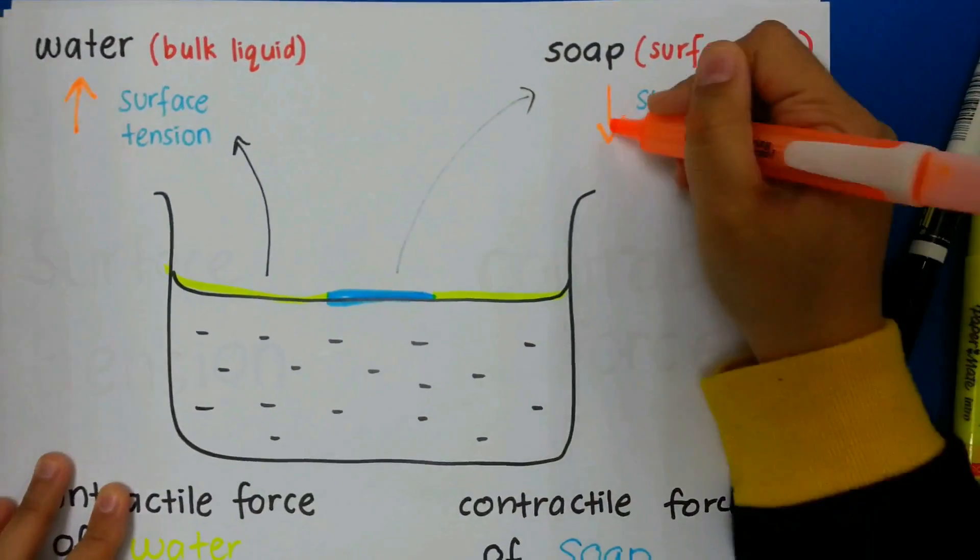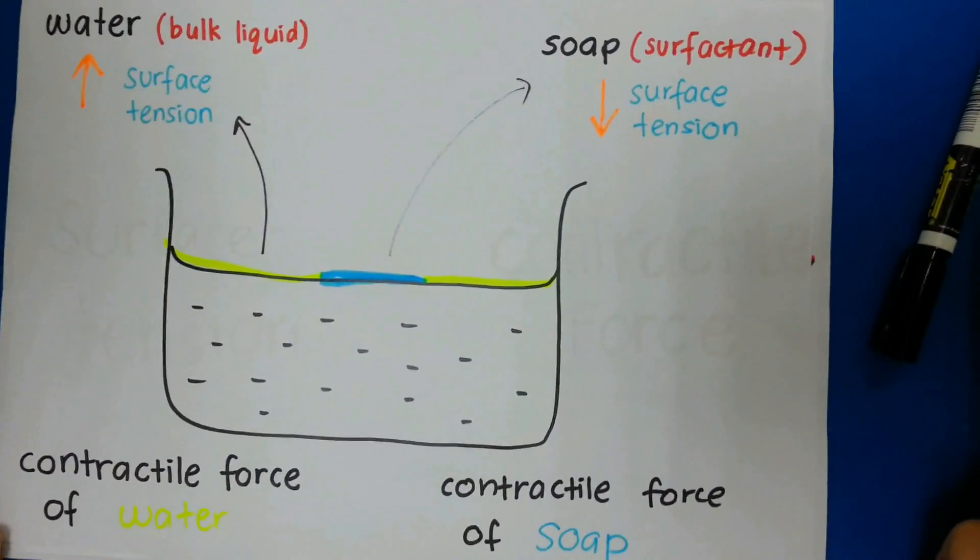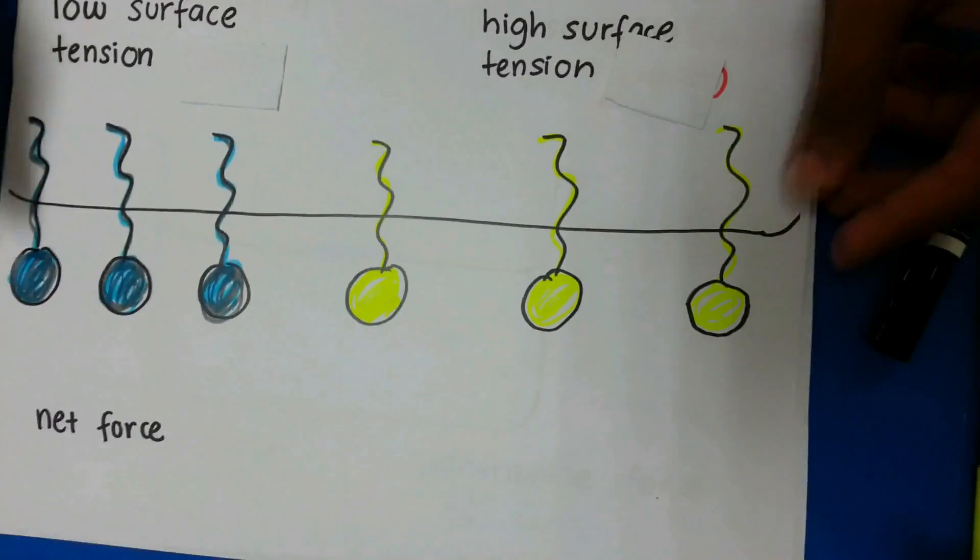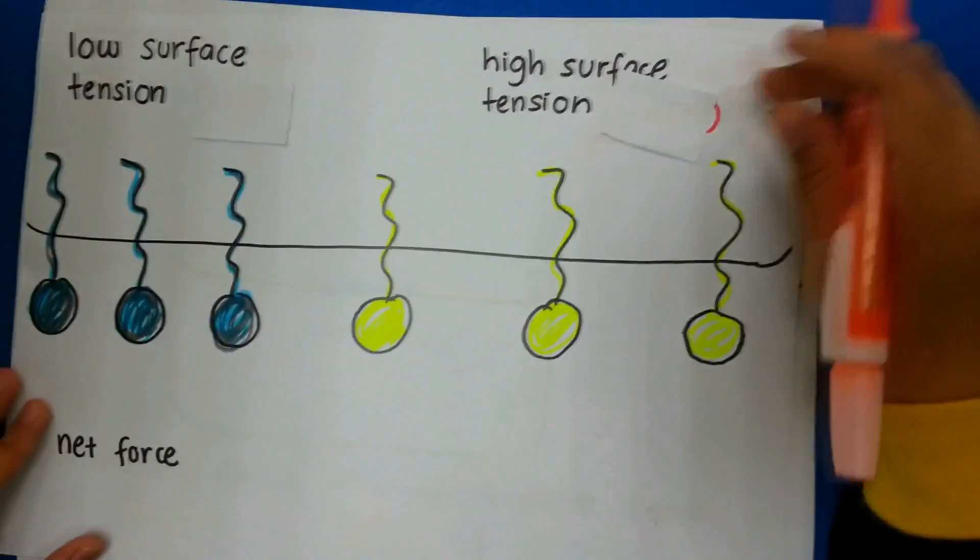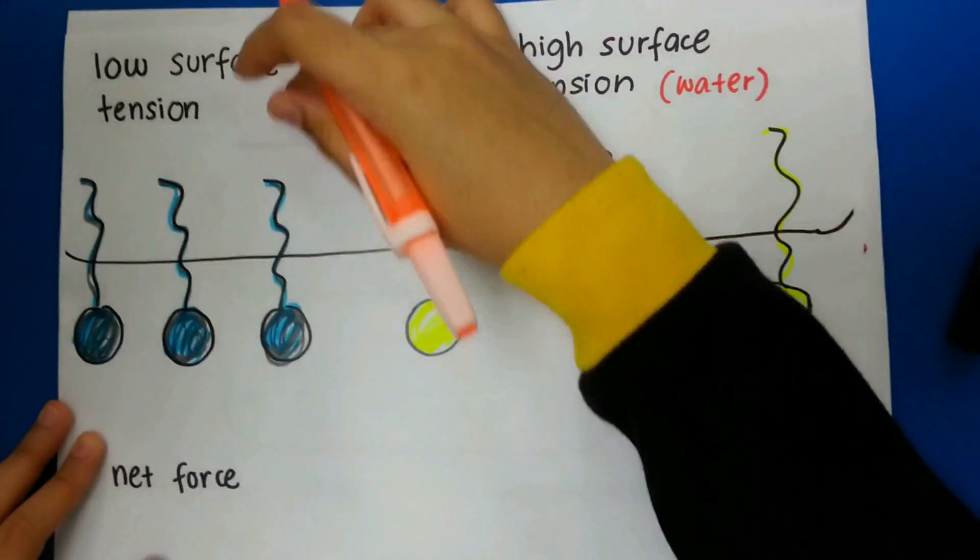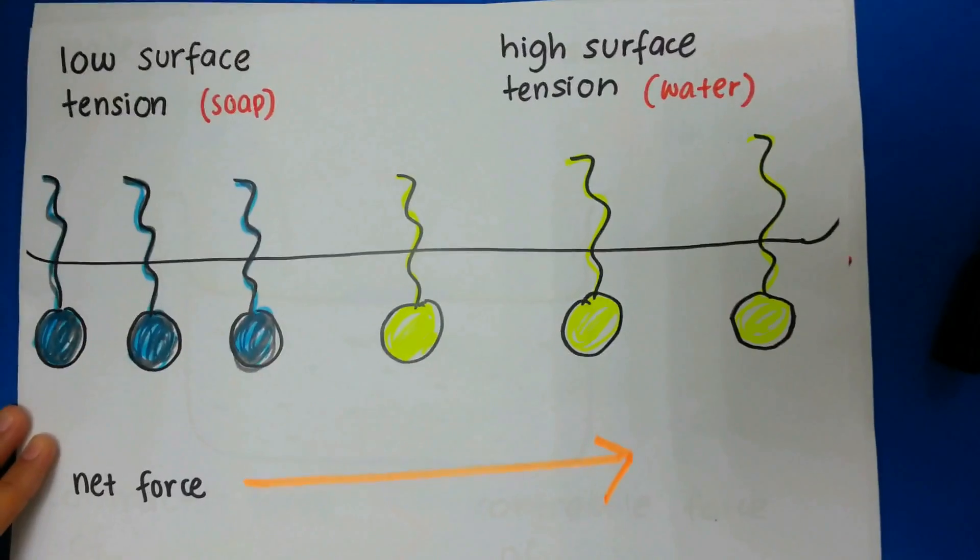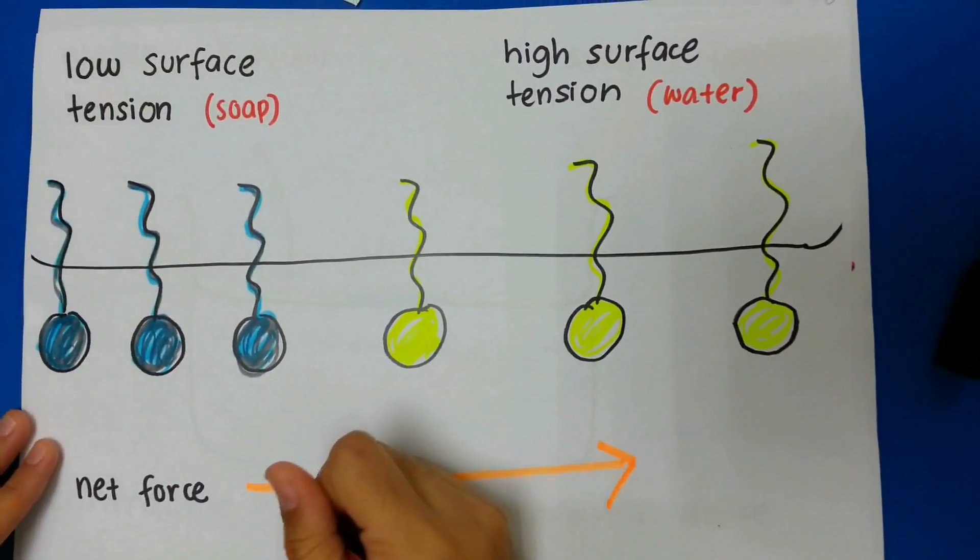Therefore, the contractile force of water is higher than the contractile force of soap. In other words, water surface tension will pull stronger than the soap surface tension. This results in the net force from a region of lower surface tension to a region of higher surface tension. This is known as Meringoni flow.